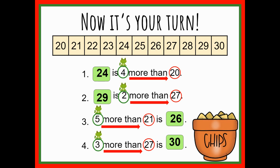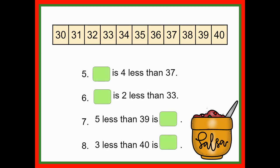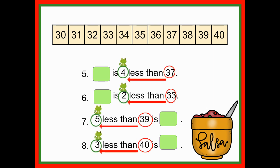Welcome back, first grade! Here are your answers — go ahead and check your work. Pause the video if you need to check numbers one through four. When you're done, erase your work or move to a new space and do numbers five through eight. This time you have a different number line starting at 30 and going up to 40. Write out your sentences in complete sentences, don't forget the period. Then pause the video and come back to check your work.